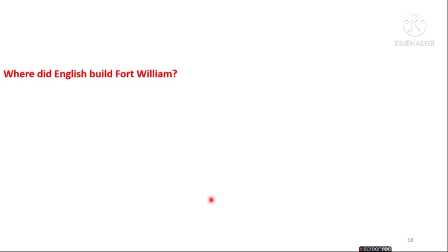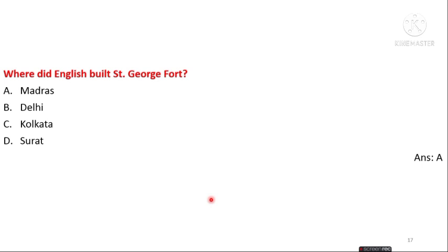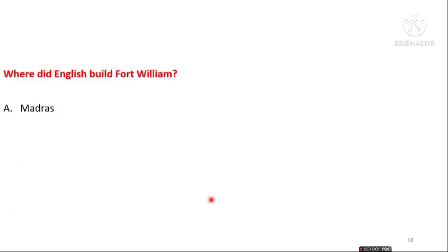The next question is: where did the English build Fort William? The options are Madras, Delhi, Kolkata, and Surat. The answer is Kolkata — the English built Fort William in Kolkata. So Saint George Fort was built in Madras and Fort William was built in Kolkata.